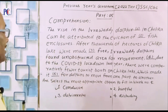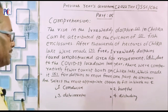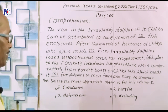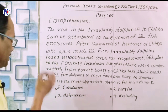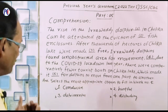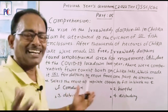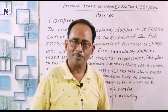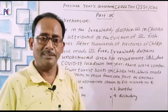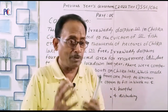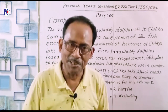The passage is now complete: 'The rise in the Iravadi Dolphin population in Chilika can be attributed to the eviction of illegal fish enclosures. After thousands of hectares of Chilika lake were made encroachment-free, Iravadi Dolphins found unobstructed area for movement. Moreover, due to the COVID-19 lockdown last year, there were comparatively fewer tourist boats on Chilika lake, which made it conducive for dolphins to move from one part to another.' Always read the passage carefully and pay attention to your word power to find the most appropriate option. Best of luck, and thank you for watching.